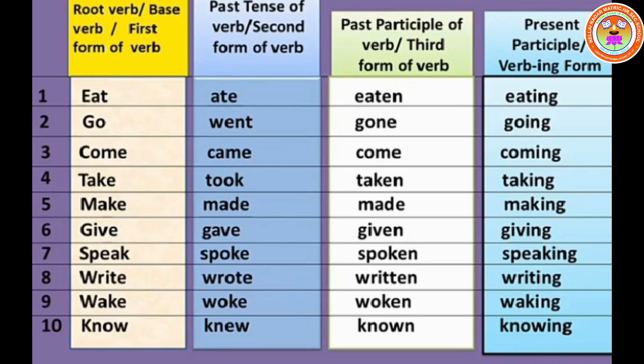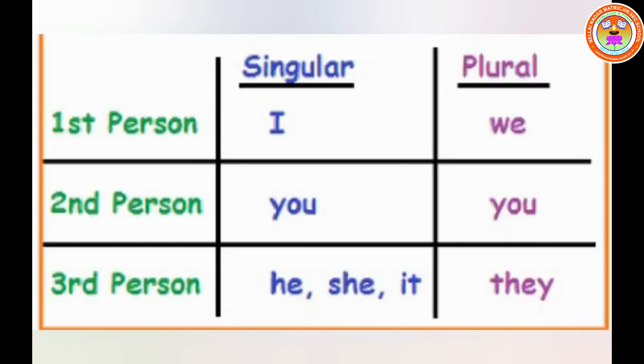For example: eat, go, come, take, make, give, speak, write, wake, and know. These words are otherwise called as action words. There are so many action words. Always the present form is used in the simple present tense — otherwise called root verb, base verb, and present form. We are going to use this subject in simple present tense, so you have to memorize this table. Here are some common subject pronouns.